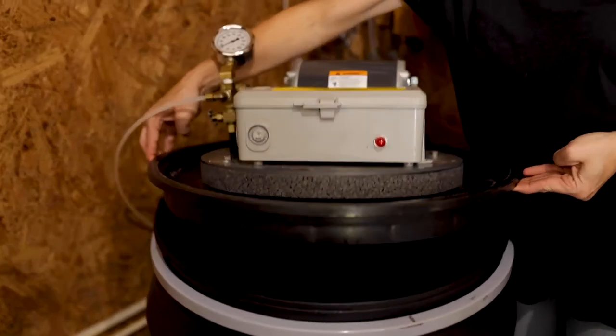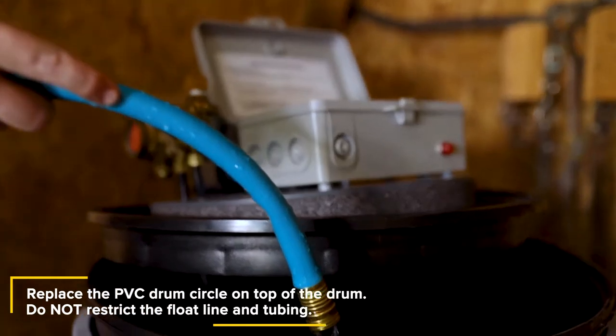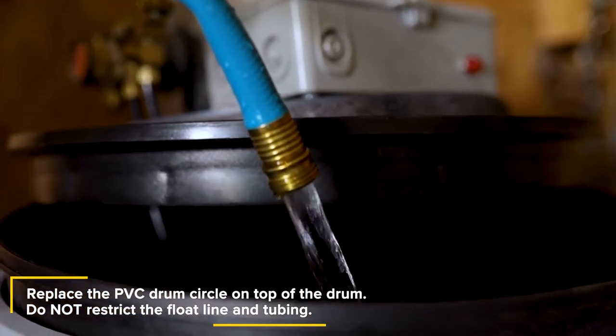Remove the PVC circle from the top of the drum and fill the drum to the halfway mark with clean water. Do not put insecticide in the drum until testing is completed.